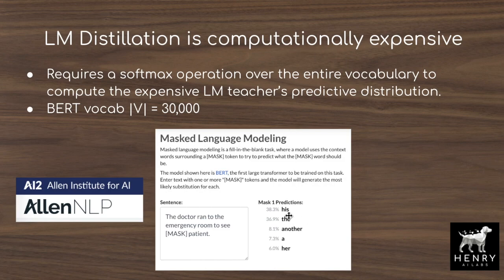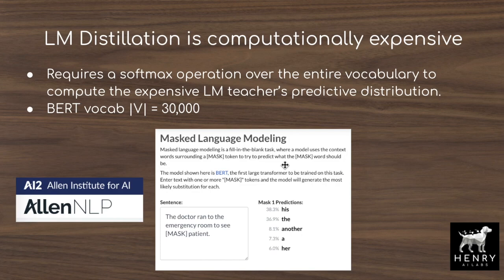The challenge with language modeling distillation is the very large vocabulary — BERT has a token vocabulary of 30,000 tokens. So when predicting a masked token like 'the doctor ran to the emergency room to see [MASK] patient,' the model assigns high probability to words like 'his,' 'the,' 'another,' and 'her,' but the remaining vocabulary words like 'airplane' or 'tiger' get incredibly small probabilities. This makes smoothing the distribution challenging, especially when training the student network, compared to distillation on a classification task with only five or so labels.